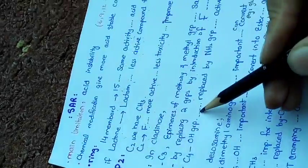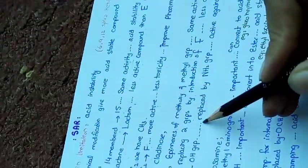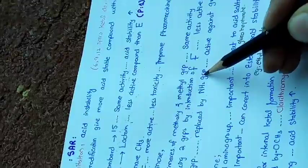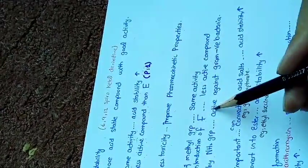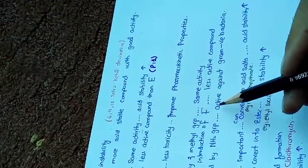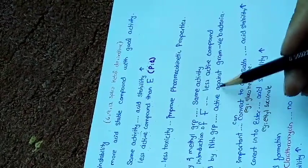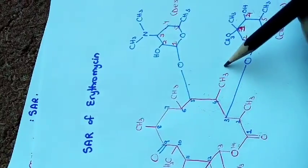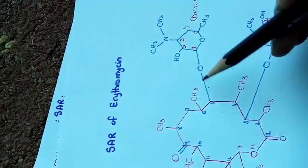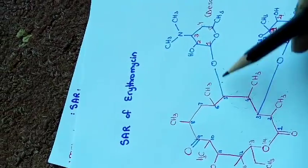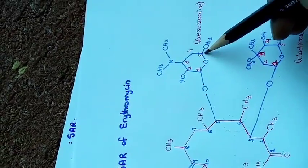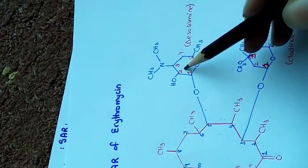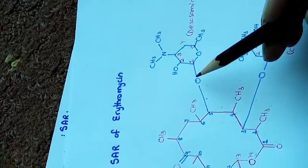Cladinose contains a hydroxyl group at position 4. If this hydroxyl group is replaced by an amino group, it gives a compound which is active against gram-negative bacteria. At position 5 of cladinose there is simply a methyl group.